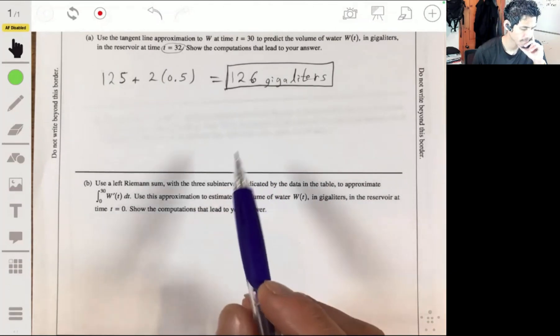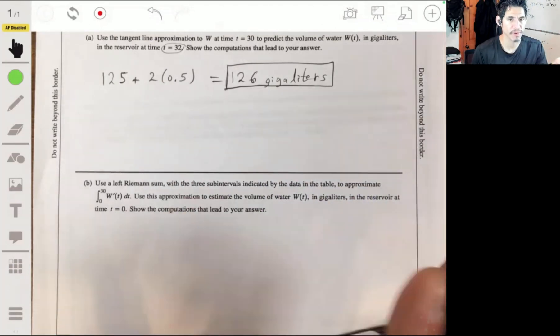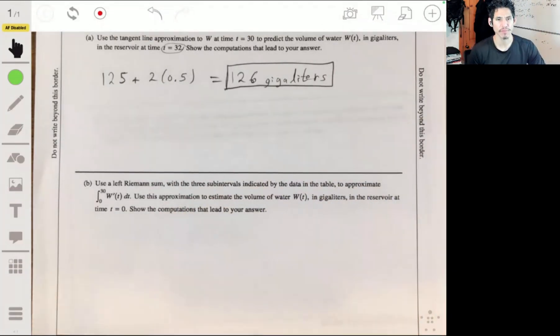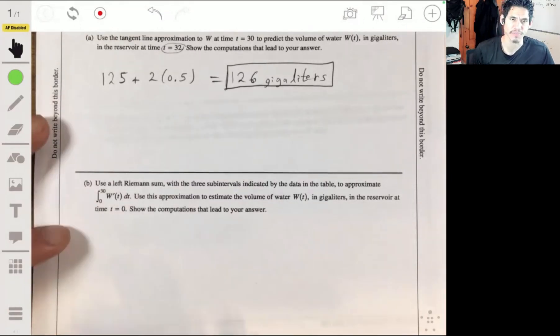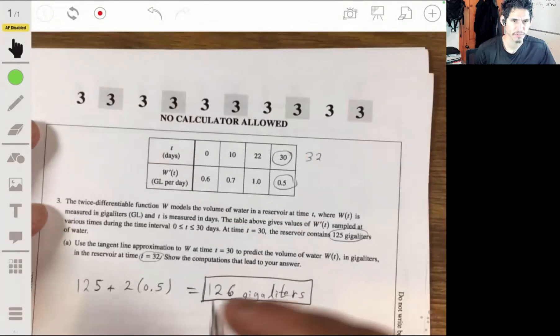Okay, so remember that the left Riemann sum, the trapezoidal rule, you're just finding an area using rectangles. It's really that simple. Don't try to memorize a formula because sometimes students will make a silly mistake because they just try to memorize the formula.